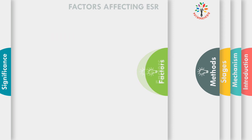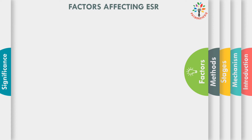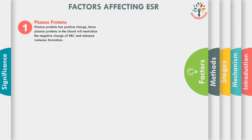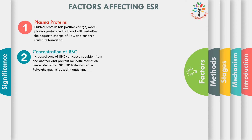Next, I am going to talk about various factors that affect ESR values. First, plasma proteins: plasma proteins have a positive charge. If more plasma proteins are present in the blood in cases of inflammation or infection, they will neutralize the negative charges of the RBC surface and cause rouleaux formation easily, leading to increased ESR. Second, concentration of RBCs: increased concentration of RBCs can cause decreased ESR, while decreased concentration of RBCs can cause increased ESR. If there is increased concentration of RBCs, there will be repulsion due to their negative charge, preventing rouleaux formation, hence decreased ESR values.